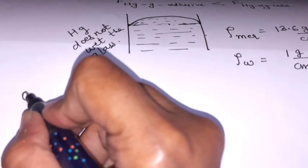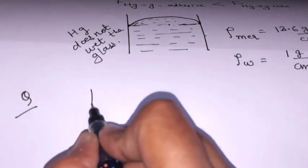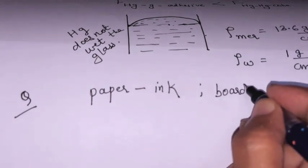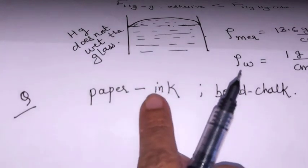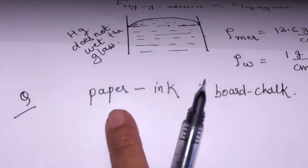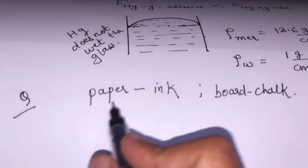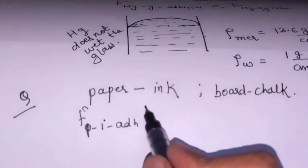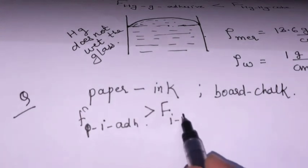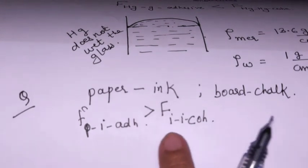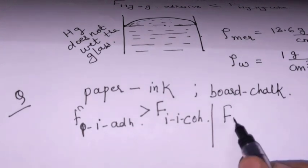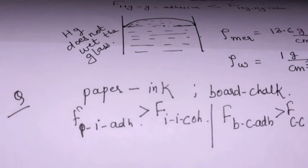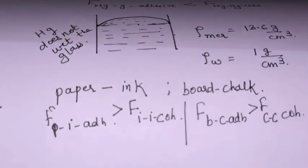The next conceptual question is: why can we write on paper with an ink pen, or why can we write on a board with chalk? We can write on paper with ink because the adhesive force between paper and ink is greater than the cohesive force between ink and ink molecules. This is the proper concept to take into consideration.